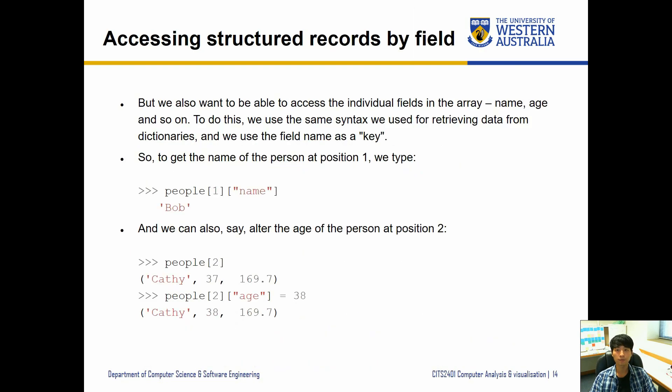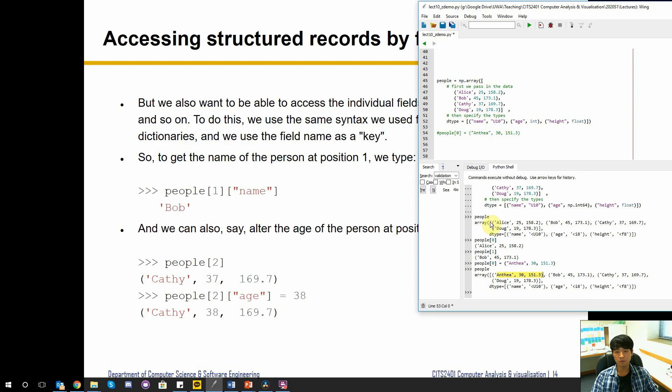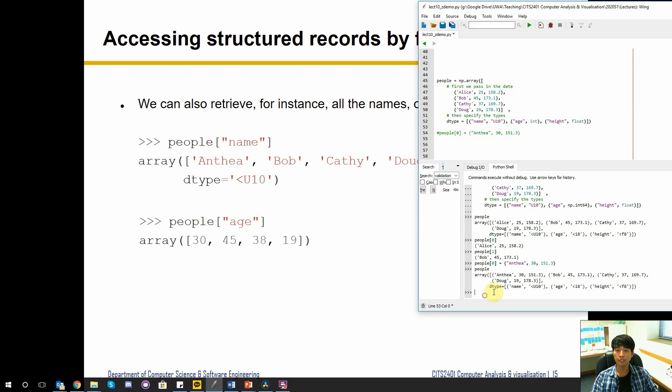The next question is how do we access the specific type that we have designated? If we are using the Python list with tuples inside, this is going to be some complex loops to deal with. However, NumPy allows us to specify the names. What we can do is specify the names that have been used to define each column. For instance, if I want all the names I can pass in 'name' into our field of indexing. It's kind of like using a dictionary.